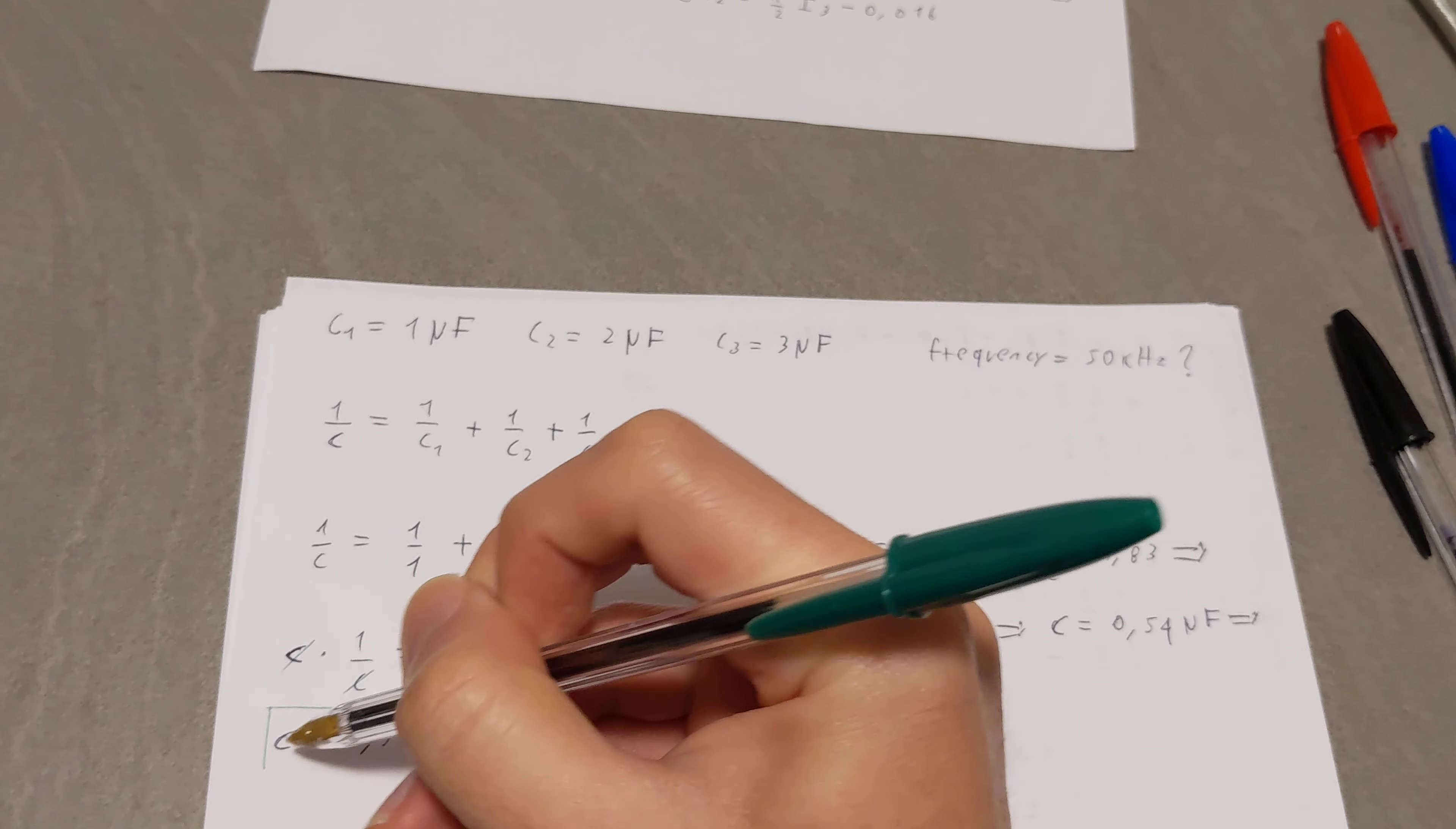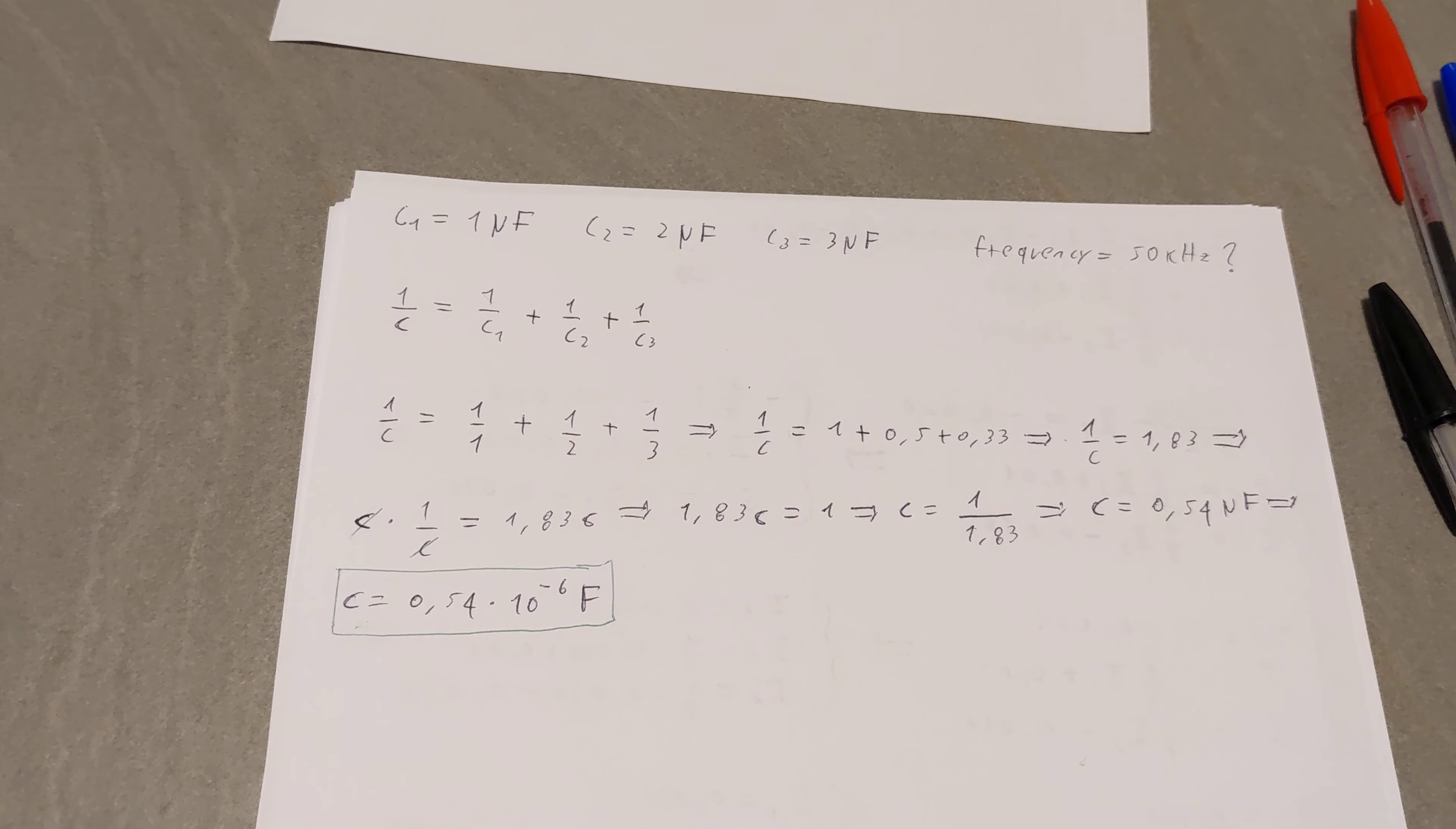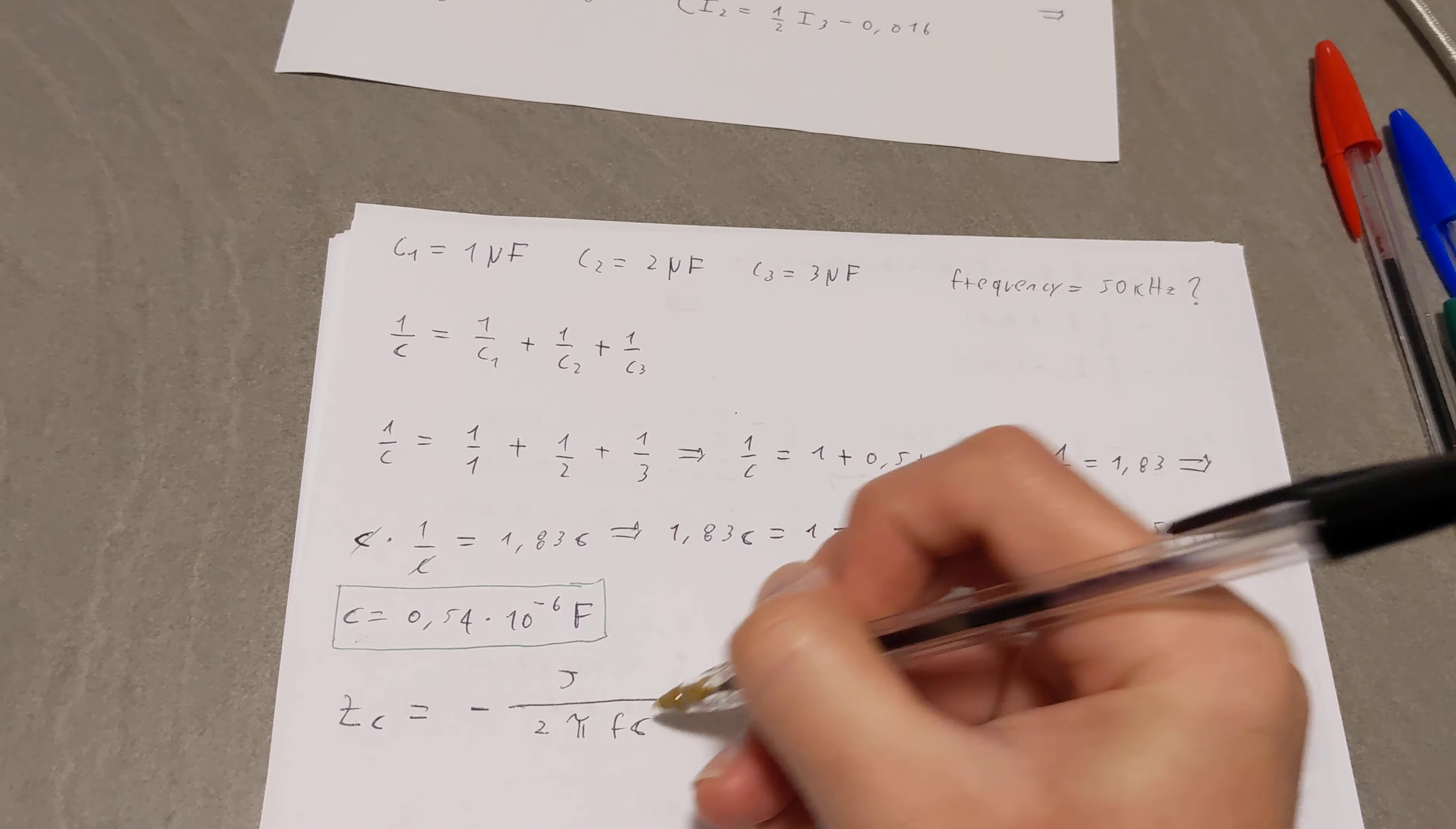But it's not over. This is not our final answer. Because at this point, we have the capacitance, but we want the impedance. So finding impedance, which is ZC, what we're going to do is use the following property: negative J over 2 pi Fc.